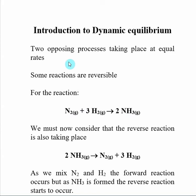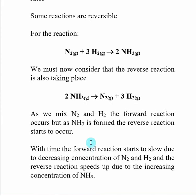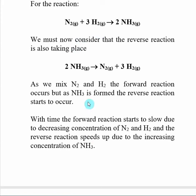If we look at this reaction and say I was to add N2 and H2 to a reaction container and cause the forward reaction to go, what would happen is in the beginning the reaction rate would be the highest because the concentrations of N2 and H2 are at their highest. As the reaction goes along, our reactants are going to be used up, and the rate of our forward reaction is actually going to decrease.